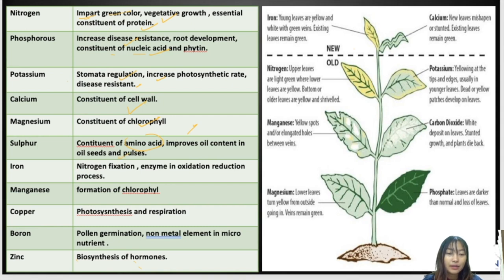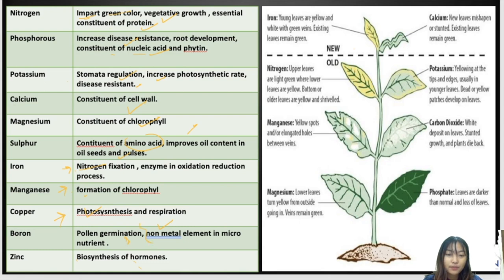Iron helps in nitrogen fixation and enzyme oxidation-reduction processes. Manganese helps in the formation of chlorophyll. Copper helps in photosynthesis as well as respiration. Boron helps in pollen germination and is the only non-metal element among the micronutrients. Zinc helps in the biosynthesis of plant hormones.